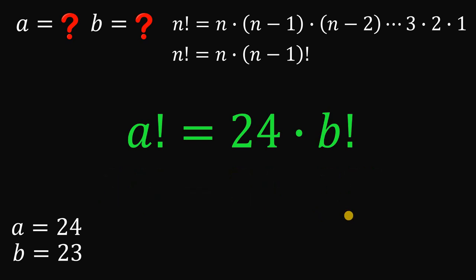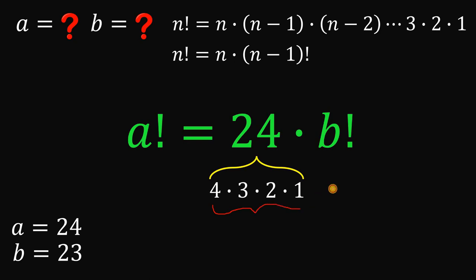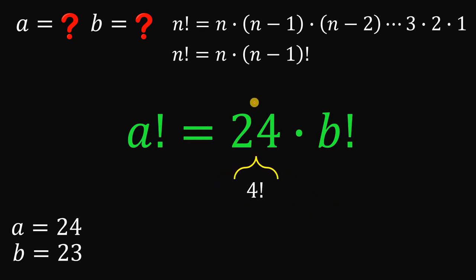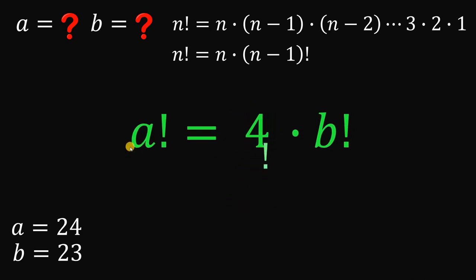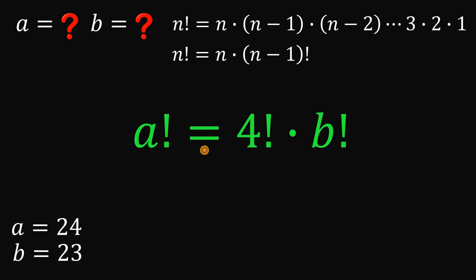Now how about the other pair? Let's focus on 24. The number 24 can be written as 4 times 3 times 2 times 1, which is simply equal to 4 factorial. So we can replace 24 with 4 factorial, giving us a factorial equals 4 factorial times b factorial.